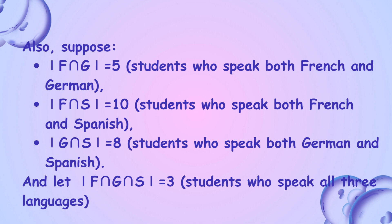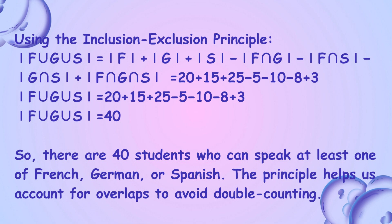And let F∩G∩S = 3 students who speak all three languages. Using the inclusion-exclusion principle, we get the answer is 40. So there are 40 students who can speak at least one of French, German, or Spanish. The principle helps us account for overlaps to avoid double counting.